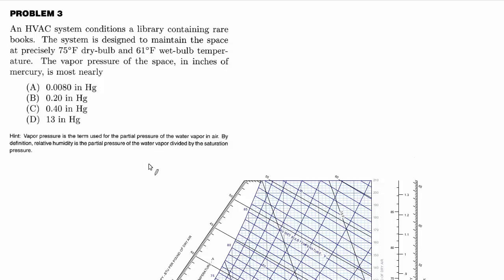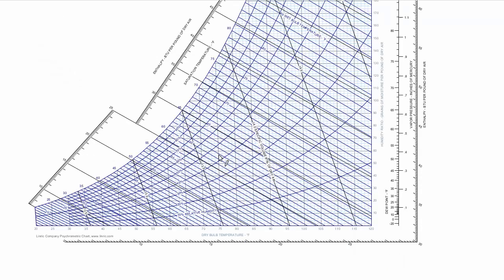There's a couple different ways to go about it. I'm actually going to show three methods. I'll start with the easiest and we'll come at it three different ways. The easiest way is on some psychometric charts, vapor pressure is actually on the chart. So let's find that point, 75 dry bulb and 61 wet bulb. That's about right here. And if you carry that over horizontally on the vertical axis on the right, we have vapor pressure in inches of mercury. That's exactly what we need. And it looks like it's just shy of 0.4.